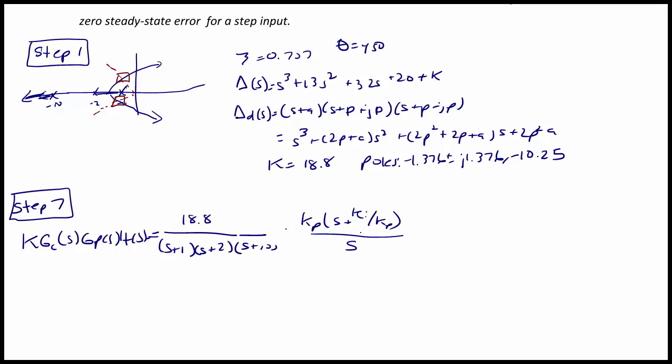We're going to select a value such that we let Ki/Kp equal a very small number like 0.01.